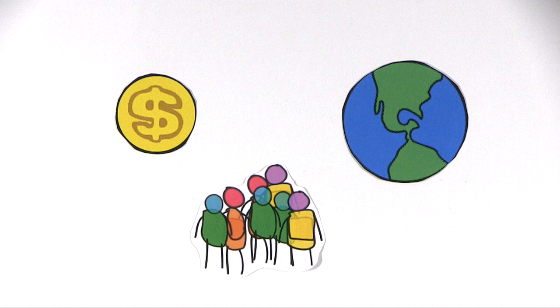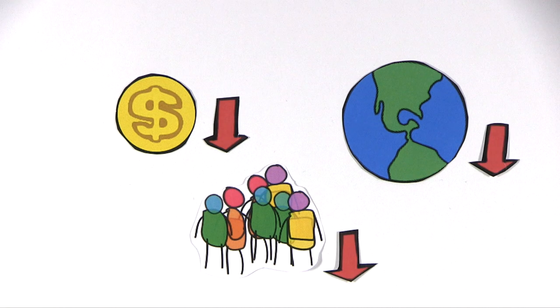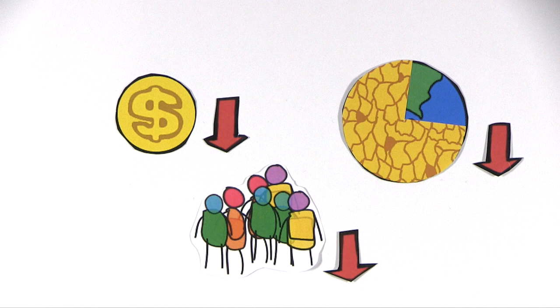Erosion is a process that has a strong impact on the economy, society and environment. Almost three-quarters of the Earth's lands are in fact being eroded.